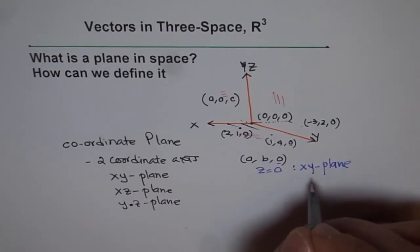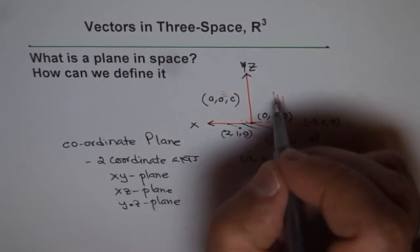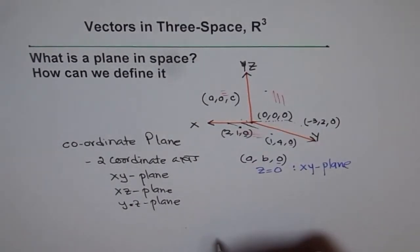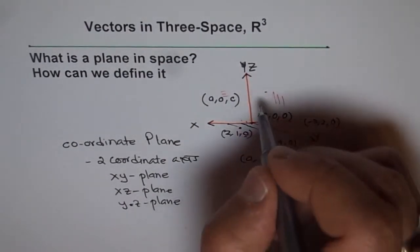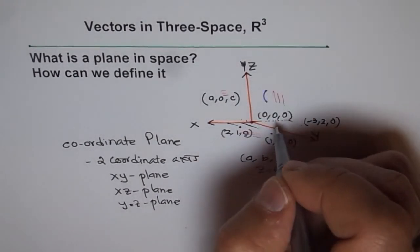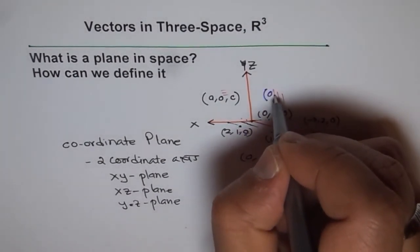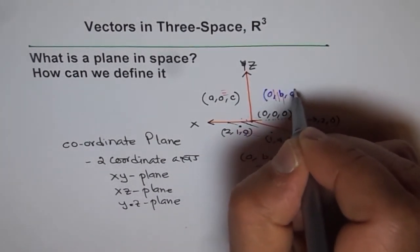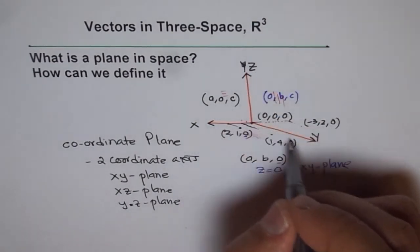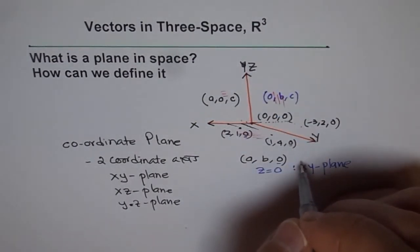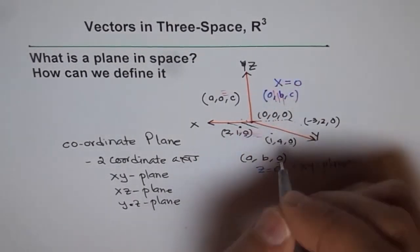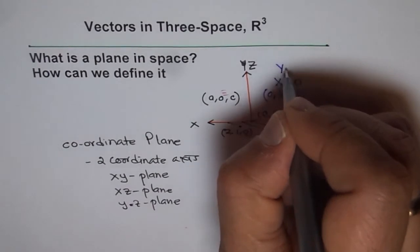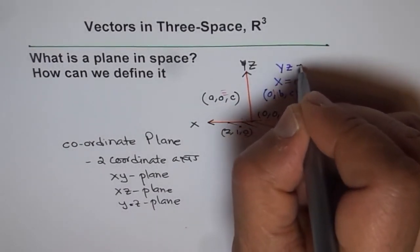Similarly, you will notice that if you write, what should be zero in this plane? Now in this plane, we are talking about Y and Z. So we say, well, in this plane, my points should be (0, B, C). And here in this plane, I observe that X is zero. So if I have X equals to zero, it means Y, Z plane. Do you understand?